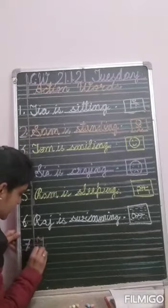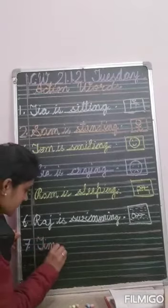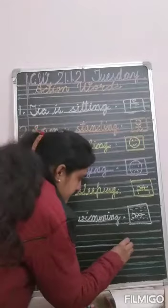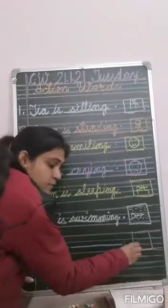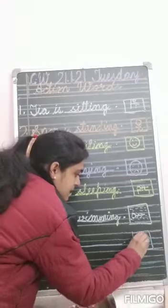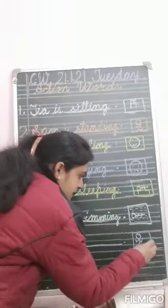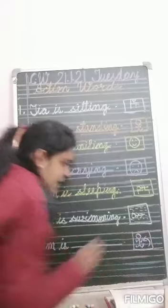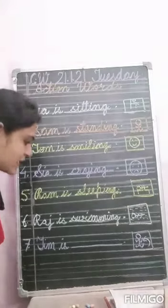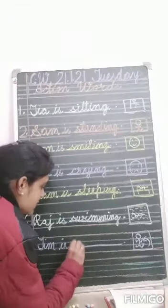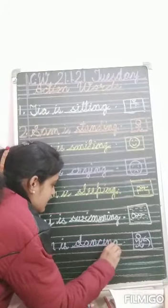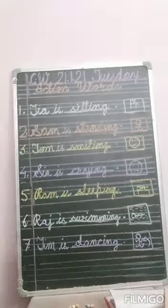Next, number seven. Tim is dash. See the action. Tim is dancing. Write down dancing. D-A-N-C-I-N-G. Tim is dancing.